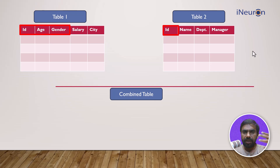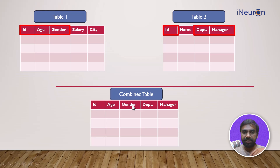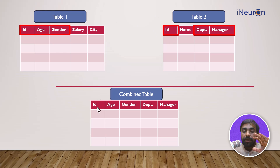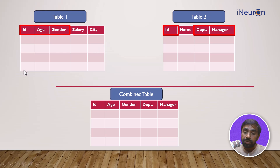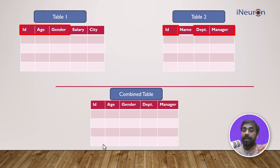And I want id, department, and manager from table two — so id, age, gender, department, and manager — with id being the common column, appearing only once. Now I'm clear about which columns I want. What about the rows? Table one has around 2500 rows and table two has 3447 rows. Which rows get reflected in the combined table is defined by the kind of join we use. There are four kinds of joins: inner join, full outer join, left join, and right join.